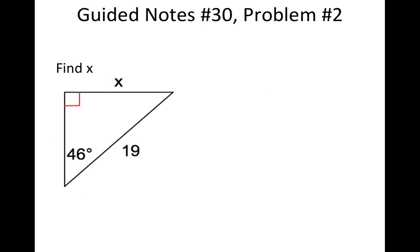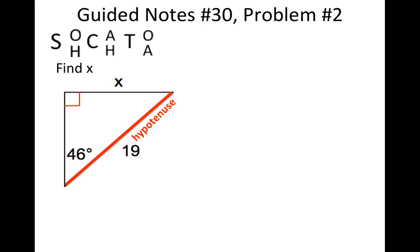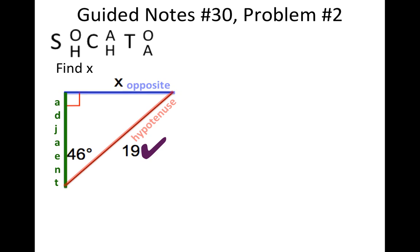This next problem will show us the power of trigonometry. We're asked to find the value of X. I write SOHCAHTOA and label my sides: hypotenuse has a value of 19, opposite has a value of X, and adjacent has no value. I look at SOHCAHTOA and determine which function uses opposite and hypotenuse — the answer is sine. Cosine has adjacent and hypotenuse, tangent has opposite and adjacent, but sine has opposite and hypotenuse.